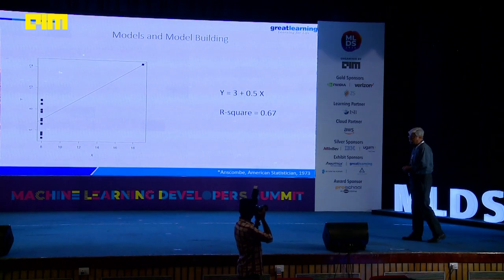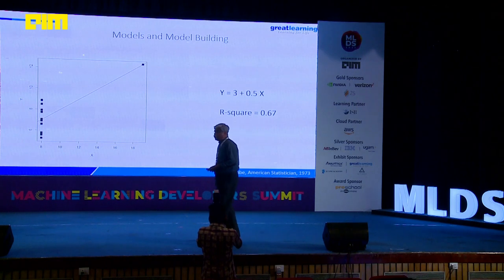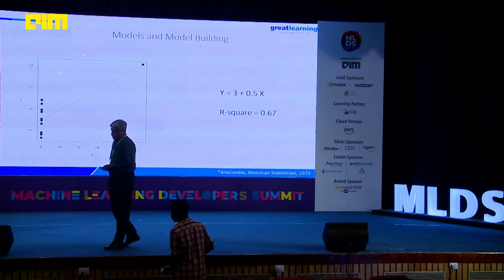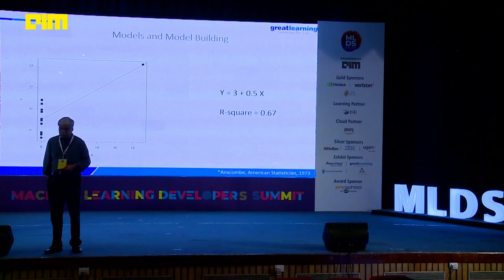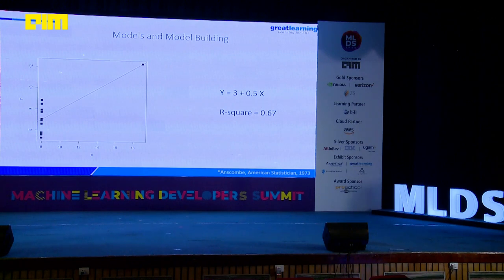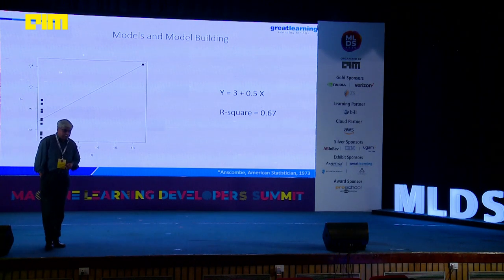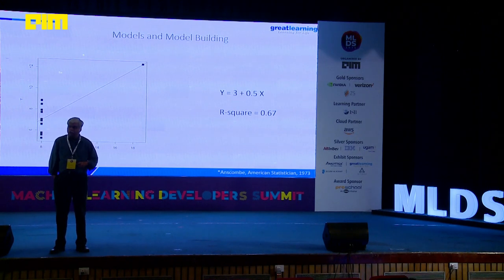So you've taken four different datasets and built what you thought were four different models. Do you believe these models are correct? As someone once said, all models are wrong, some models are useful. What I've demonstrated in terms of linear regression can happen for anything — neural networks, random forests, support vector machines — whatever your favorite modeling approach is. Different datasets with different characteristics can yield similar models, which begs the question: what exactly is the model doing?